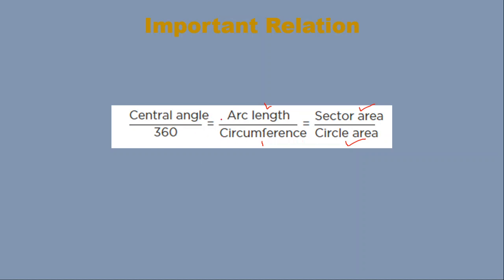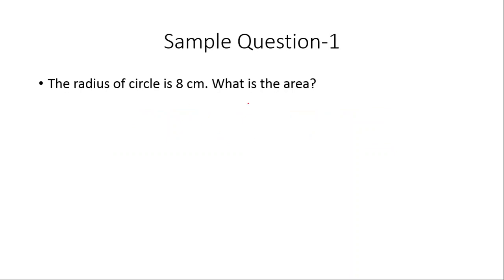Using these relations, we can always find the unknowns, as we will see in the coming examples. The radius of the circle is 8 centimeters — what is the area? Area is πr², so we put r = 8 and we get 64π.